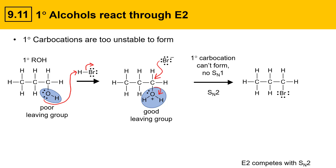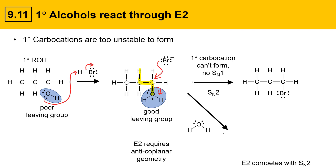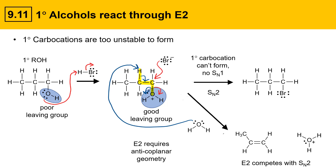E2 mechanisms compete with SN2 mechanisms. The E2 reaction requires an anti-coplanar geometry, where the proton being abstracted and the leaving group must be coplanar. This species can achieve the required geometry, as indicated here with the yellow highlight. That would enable a base like water to come by, grab the beta proton, with electrons flowing and the leaving group leaving, giving an alkene product. SN2 and E2 reactions occur together.